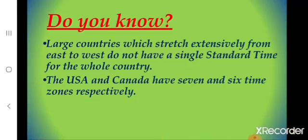Large countries which stretch extensively from east to west do not have a single standard time for the whole country. The USA and Canada have 7 and 6 time zones respectively. Whereas India has taken the local time of the longitude of 82 degrees 30 minutes east as the Indian Standard Time, also termed as the standard meridian of India.